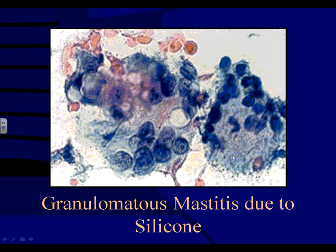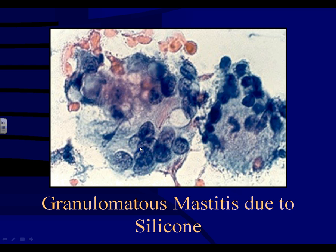Silicone mastitis is a granulomatous inflammation occurring in the setting of ruptured silicone breast implants. You look for multinucleated giant cells that may have engulfed globules of refractile, non-polarizable foreign material — the silicone material. Histiocytes are very commonly vacuolated as well. History is important here. Patients with silicone mastitis can also develop breast cancer, so you have to make sure not to miss that.